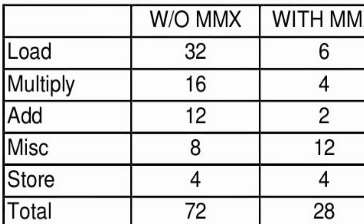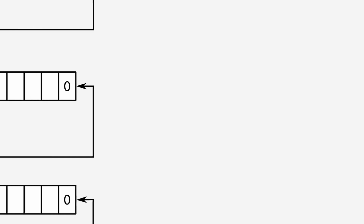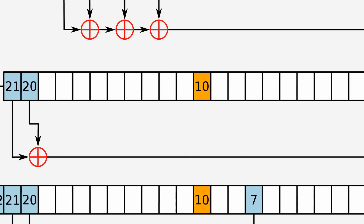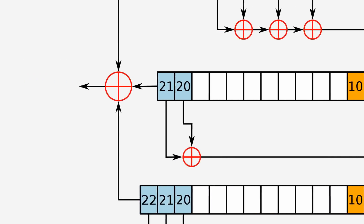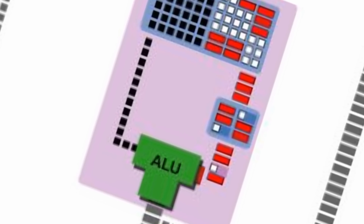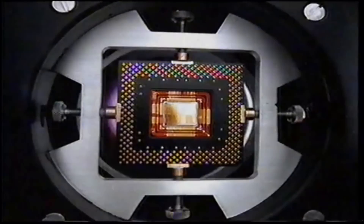This parallel operation uses 64-bit registers. Depending on the operation, these are defined as 8 8-bit bytes, 4 16-bit words, 2 32-bit double words, or 1 64-bit quad word.